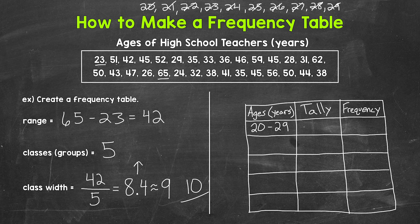After 20 to 29 years old, we have 30 to 39 years old. Then we have 40 to 49 years old. Then 50 to 59 years old. And then 60 to 69 years old. So those are our five classes.